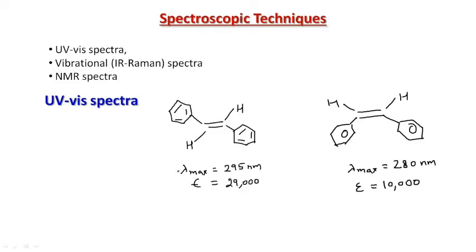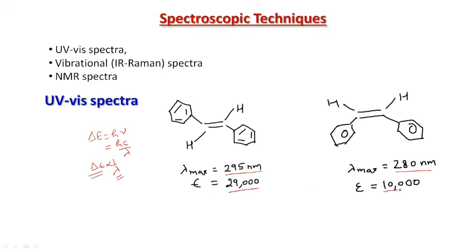Now we discuss spectroscopic techniques. In UV-visible spectroscopy, the trans isomer has more effective p orbital overlapping and therefore the compound has lower energy. Since ΔE = hν = hc/λ, lower energy corresponds to a higher wavelength. So λ(max) for the trans isomer is higher than for the cis isomer, while the energy of the trans isomer is lower than that of the cis isomer. The molar extinction coefficient (ε) for the trans isomer is also higher than for the cis isomer. Through this, one can distinguish cis and trans isomers.